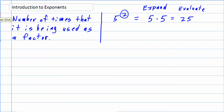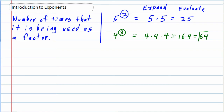So one more example — let's look at 4 cubed. The exponent is a 3, so it's telling me that that 4 needs to be written as a factor 3 times, with multiplication in between. That's what factors are — they're the multiplication. So 4 times 4 times 4, that would be 16 times 4, or 64. So if I'm evaluating, 4 to the third is 64.